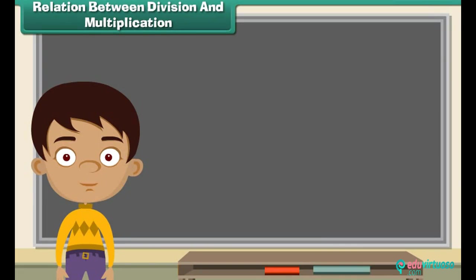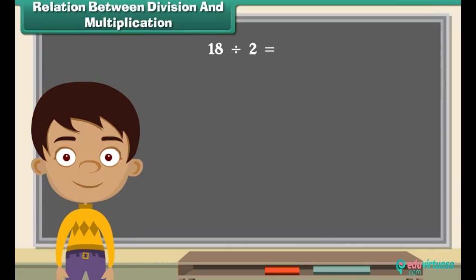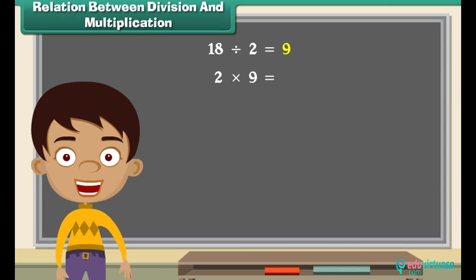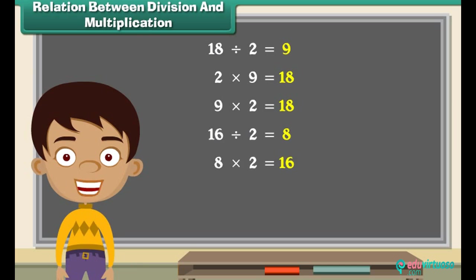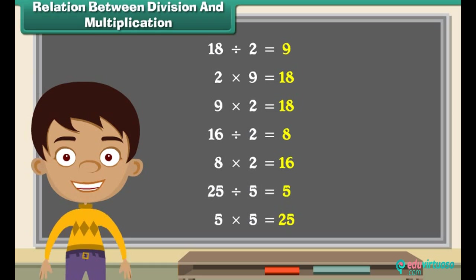Relation between division and multiplication: eighteen divided by two is nine, and if we multiply two and nine we get eighteen. Sixteen divided by two is eight, and two multiplied by eight is sixteen. Similarly, twenty-five divided by five is five, and five multiplied by five is twenty-five.